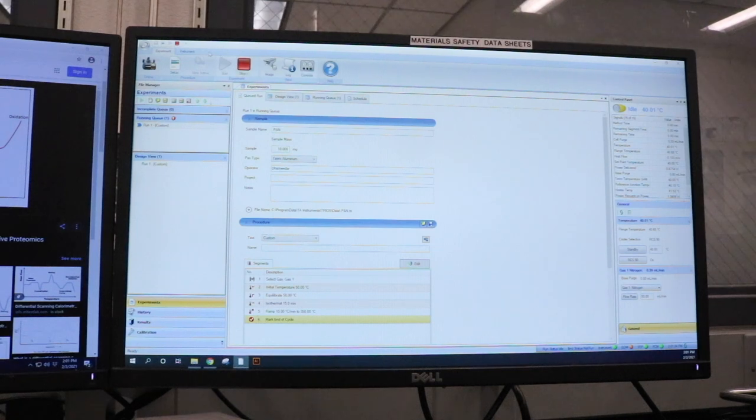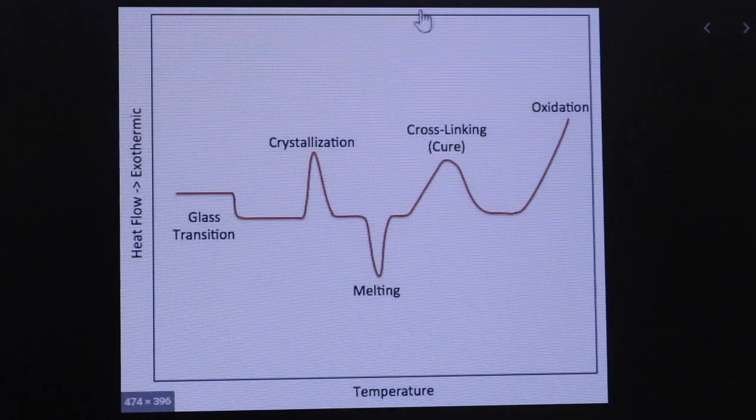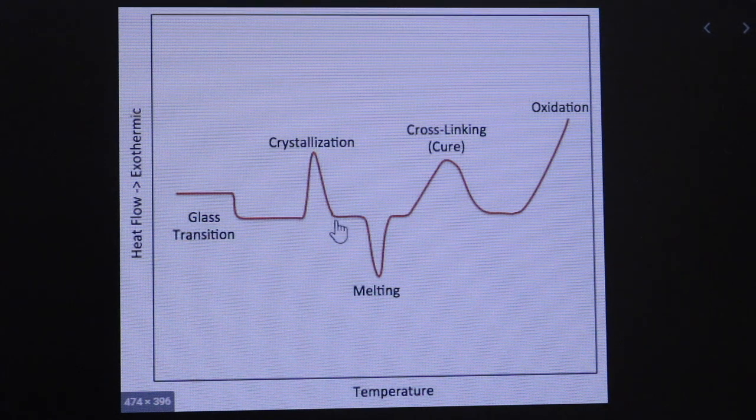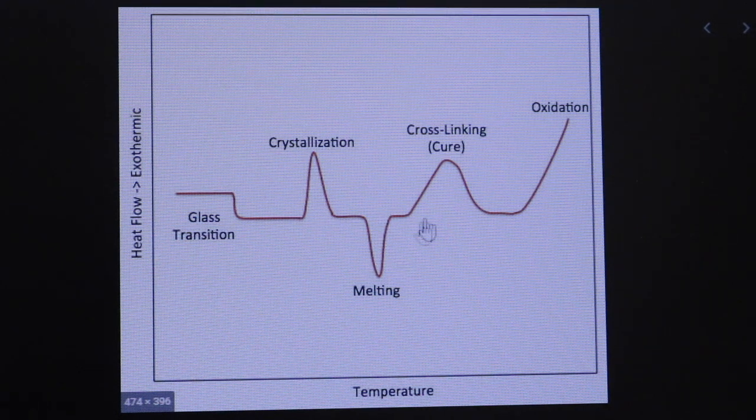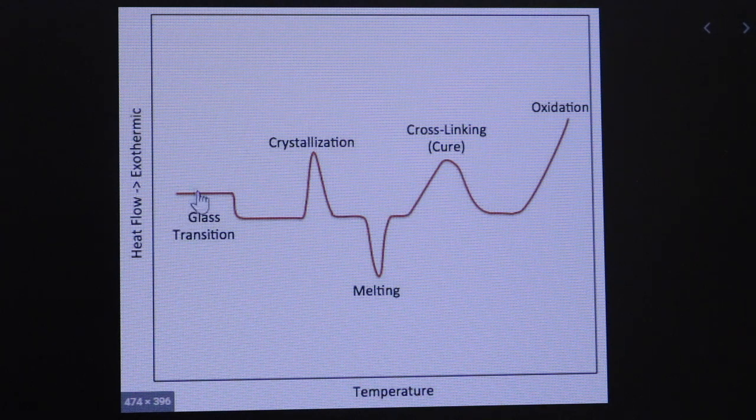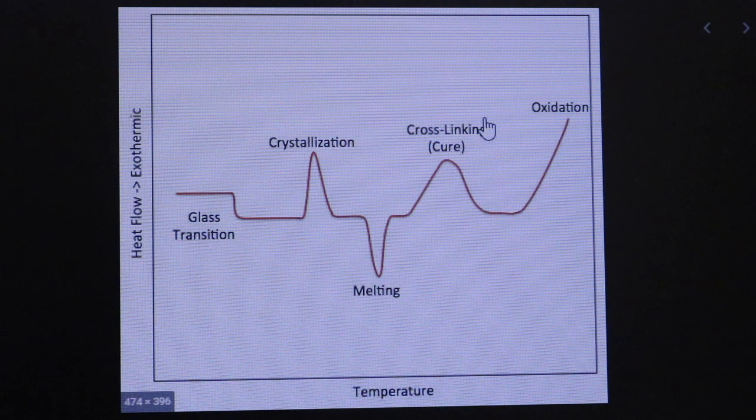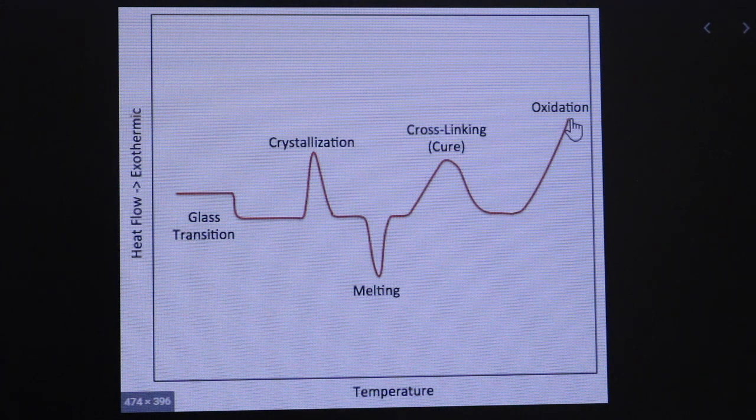Differential scanning calorimetry can be used to measure a number of characteristic properties of polymeric samples. Using this technique, it is possible to observe melting, crystallization, glass transition, as well as the study of oxidation and other chemical reactions that take place in material as a function of temperature.